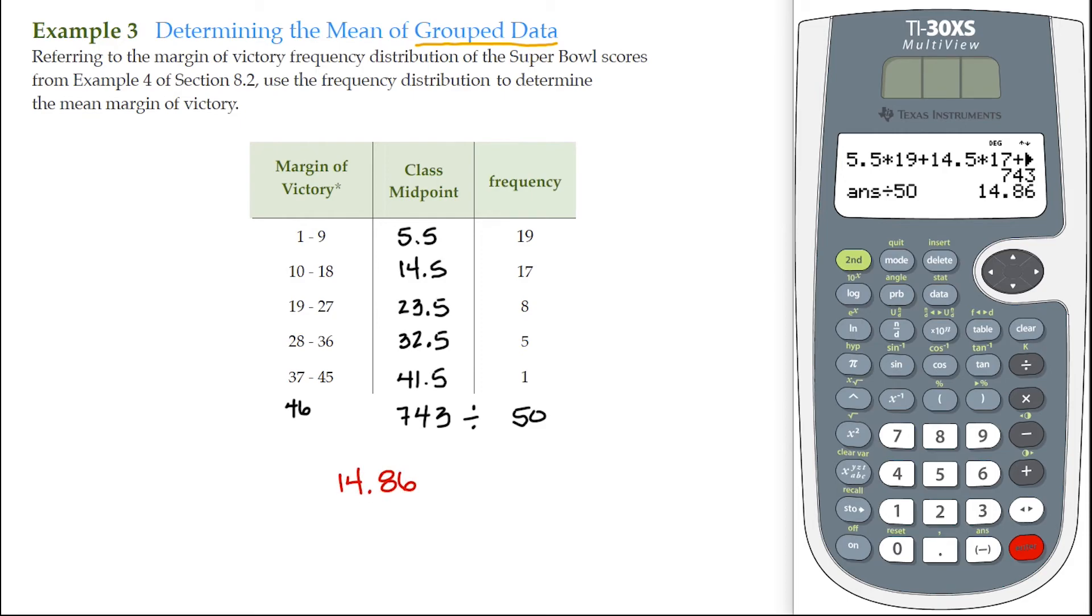Now, coincidentally, if we were to go ahead and add up each individual margin of victory from that previous example, add all those up and divide by 50, that actually comes out to be 14.32 points. So it's pretty close to the 14.86 points that we did by using grouped data. And there we go.